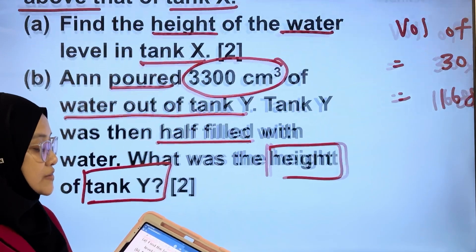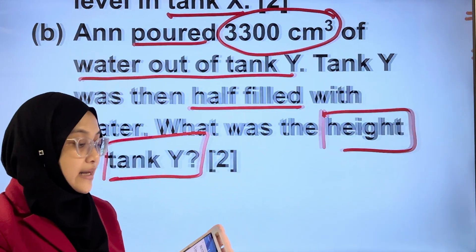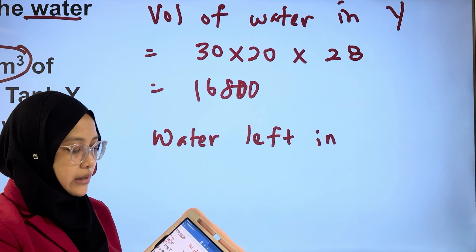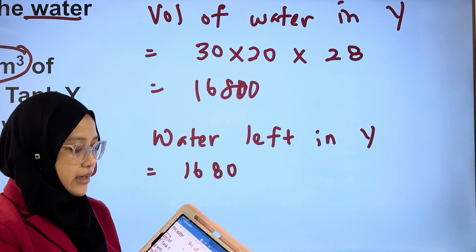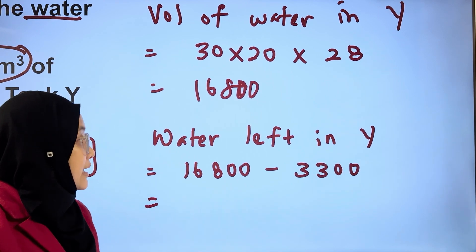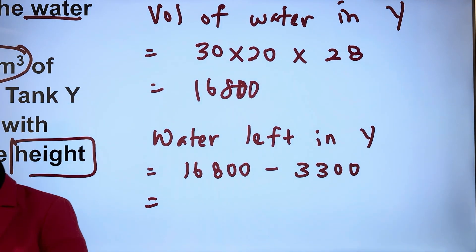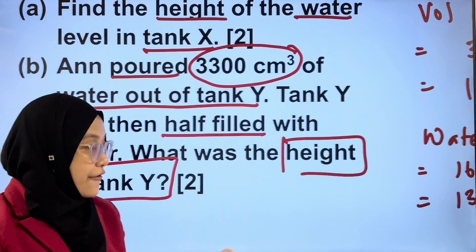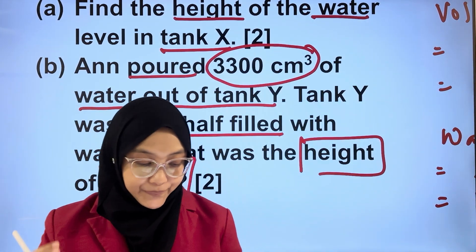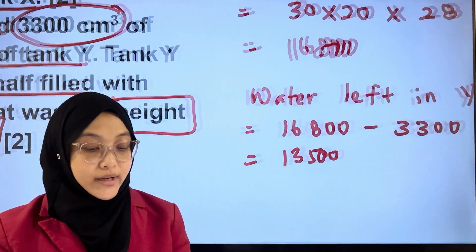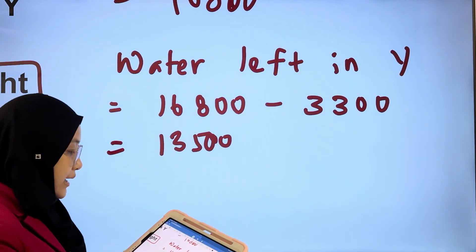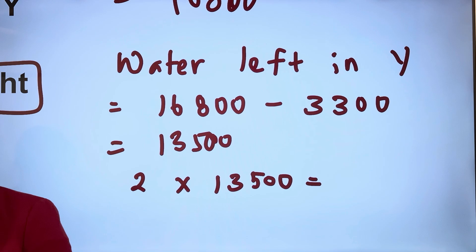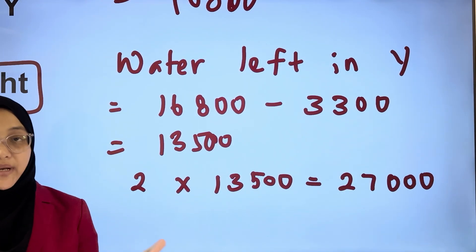The question says 3,300 cubic centimetres was taken out. So let's find out the amount of water left in Y. Water left in Y equals 16,800 minus 3,300, that gives us 13,500 cubic centimetres. This volume is half of the capacity of tank Y. We are asked to find the height of tank Y, so we need the full capacity. That will be 2 multiplied by 13,500, which gives us 27,000 cubic centimetres.